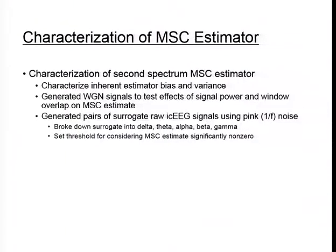We then broke these signals down into delta, theta, alpha, beta, and gamma bands at a one-second resolution, just as we did with actual intracranial EEG signals, and calculated coherence estimates for those as well. The reason for doing this was to set a threshold for considering a coherence estimate significantly non-zero.